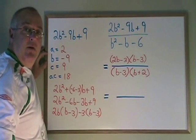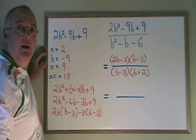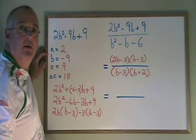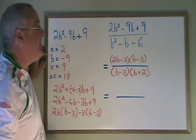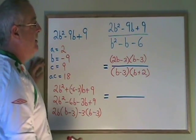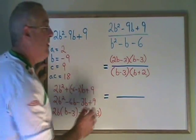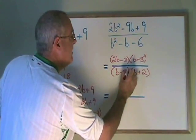Both of these factoring methods are taught in other videos that I've made called complex trinomial and simple trinomial. Now I can do my cancelling. There is a b minus 3 binomial on the top and on the bottom, so I cancel those.